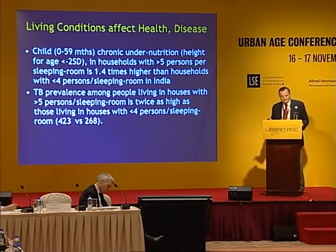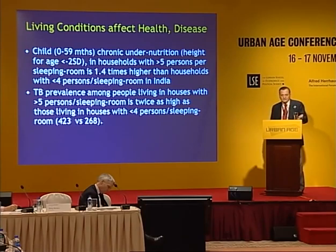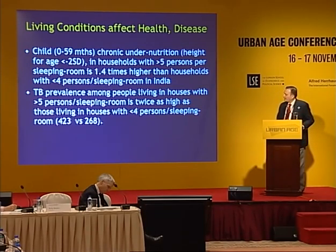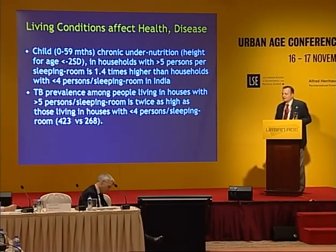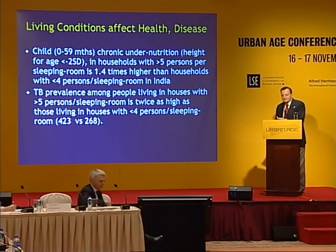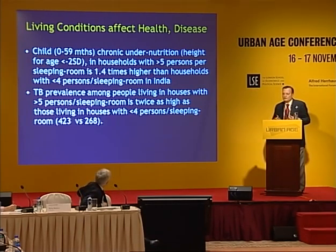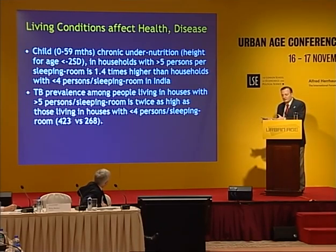Tuberculosis prevalence, which was referred to in the Hong Kong presentation just before me, living in houses with more than five persons per sleeping room is twice as high as those with four persons per sleeping room. This tells us that if public health interventions, which are multi-sectoral, have to be focused, we need to target our efforts carefully.